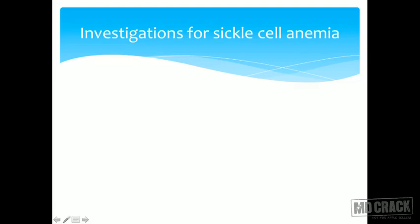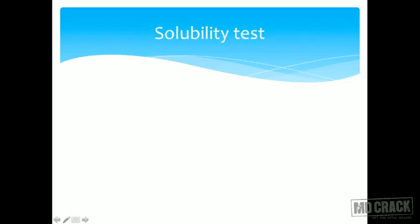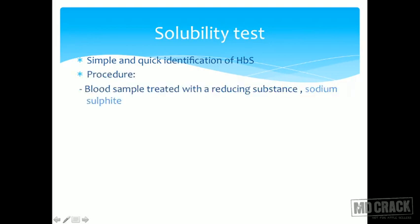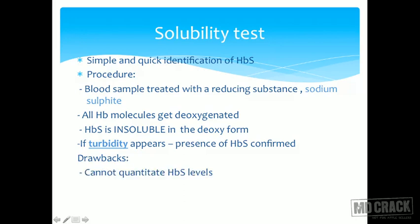Investigations for sickle cell anemia include the sickling test, solubility test, hemoglobin electrophoresis, prenatal diagnosis, and amino acid sequencing. The solubility test is the easiest — the blood sample is treated with a reducing substance like sodium sulfide to convert hemoglobin to the deoxy state; HbS is insoluble and forms turbidity. However, this test cannot differentiate the trait from the disease, as it cannot quantify how much HbS is present.